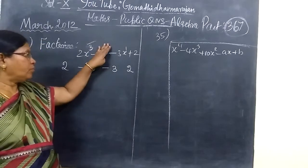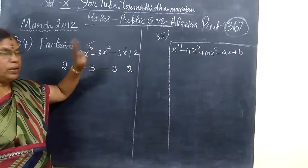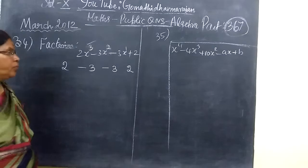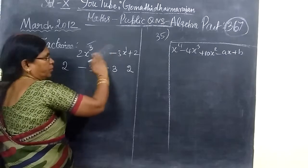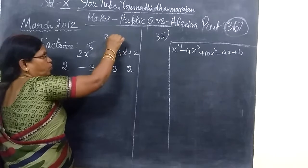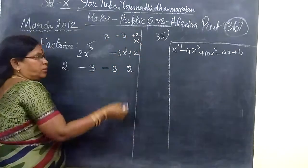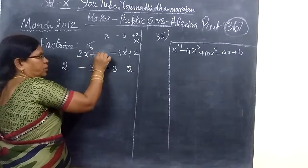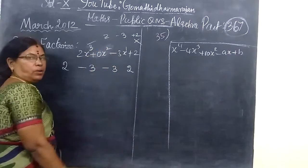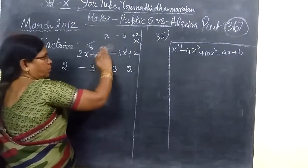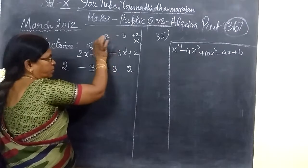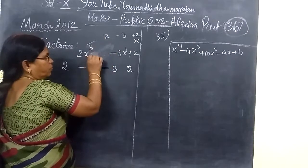Suppose x² is missing, you should write the coefficient as 0. You should write it as 0x². So standard form you will check first, then you are doing the question.